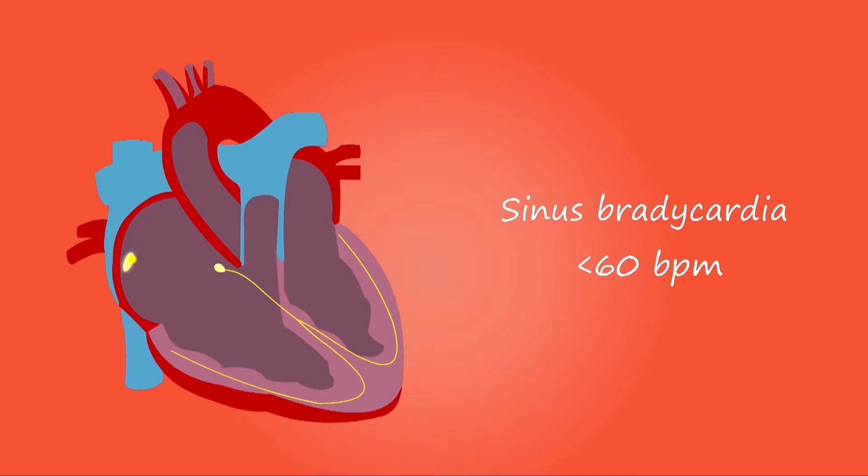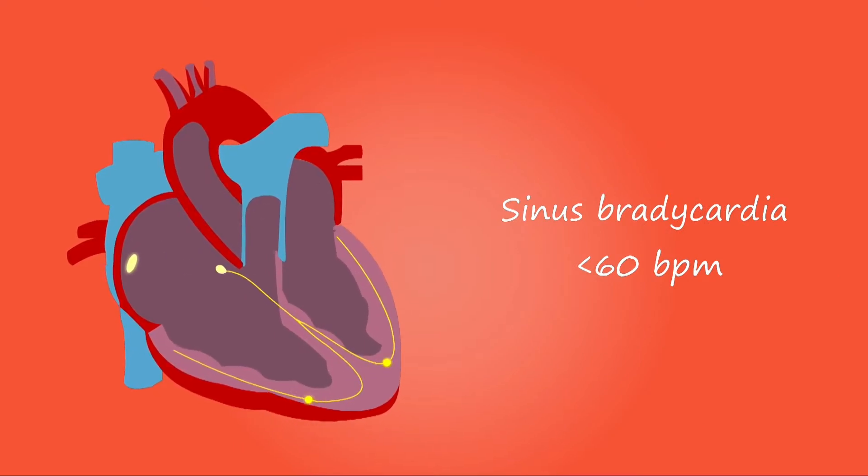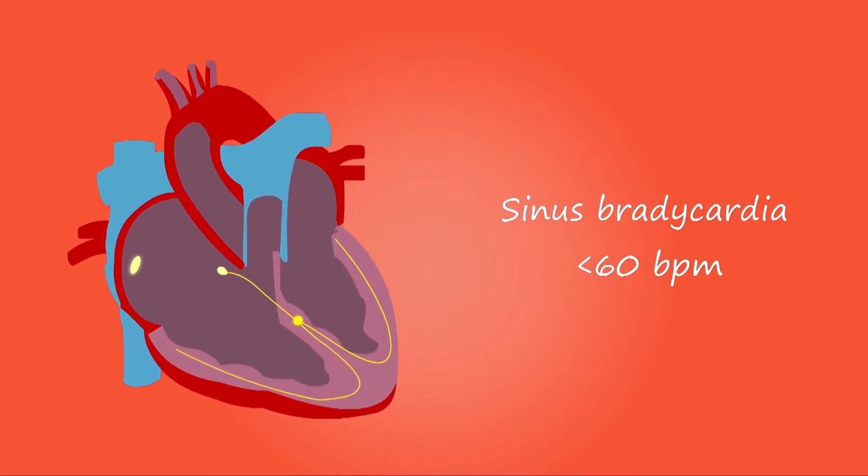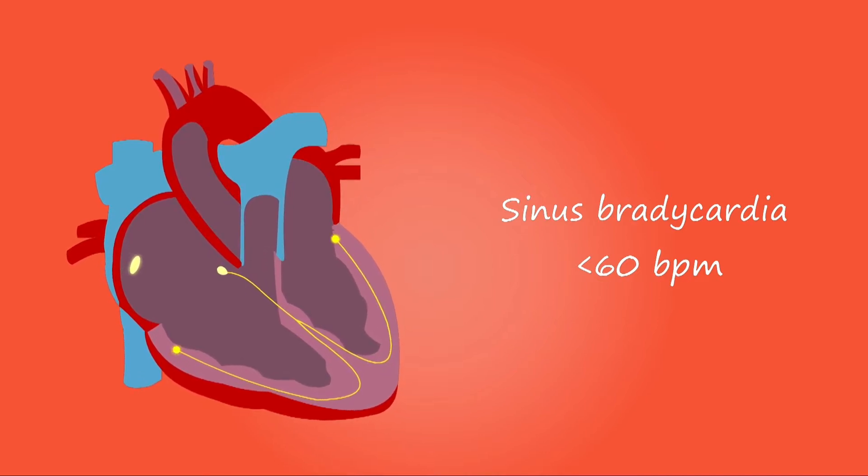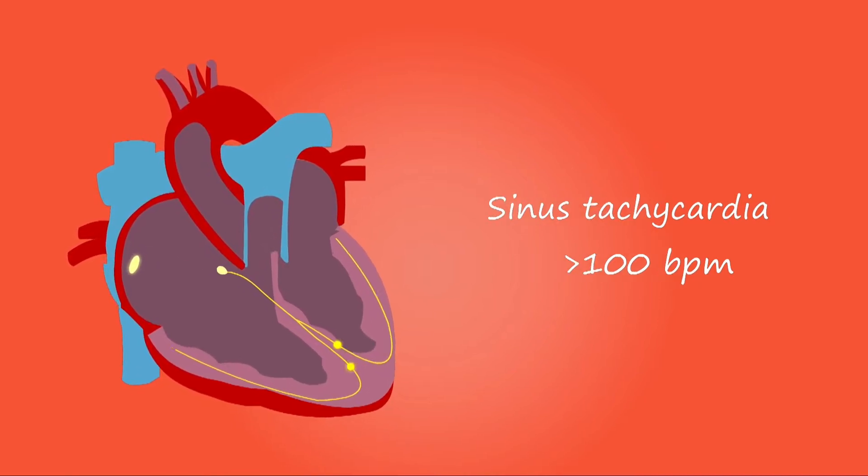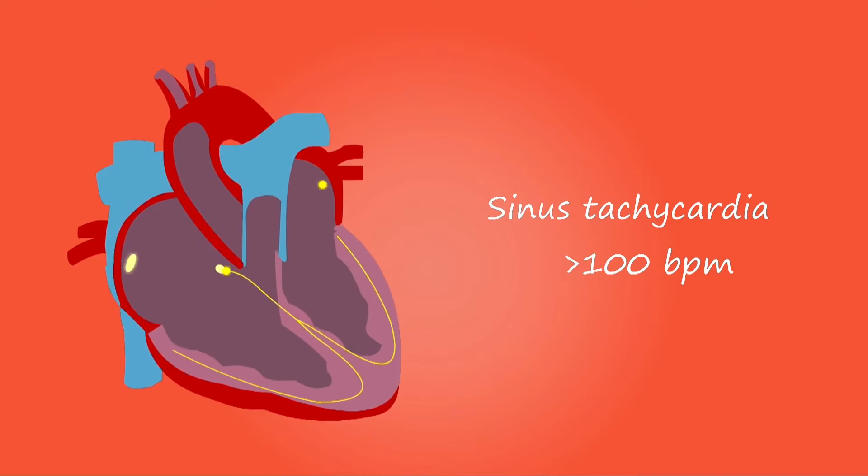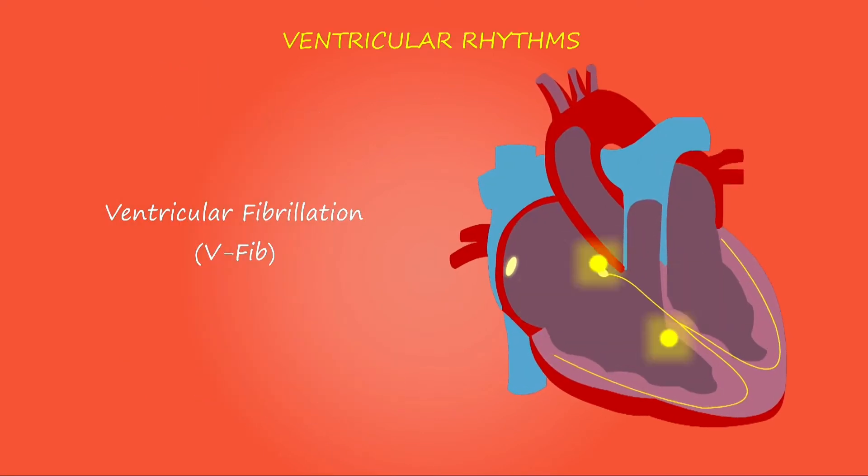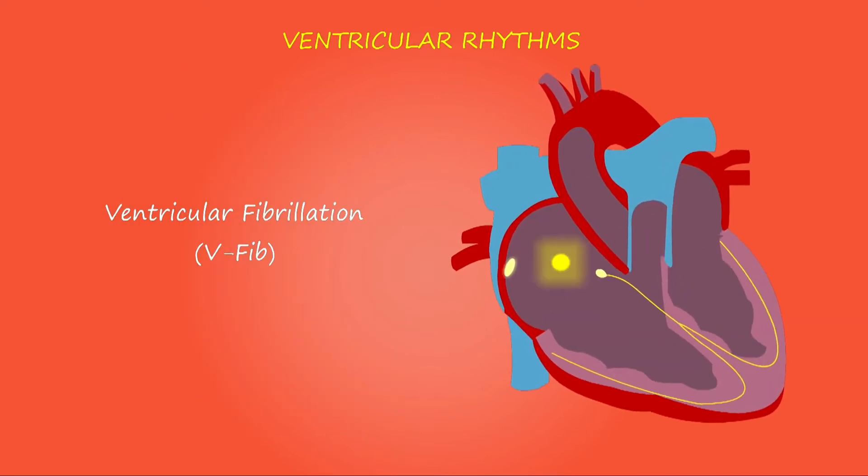When the heart beats too slow, which is less than 60 beats per minute, the condition is known as bradycardia. While when the heart beats too fast, which is more than 100 beats per minute, the condition is known as tachycardia. And when there is irregular heartbeat rhythm, the condition is known as fibrillation.